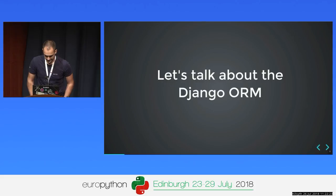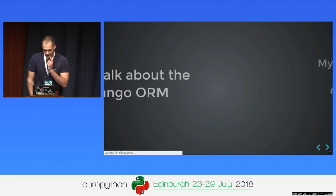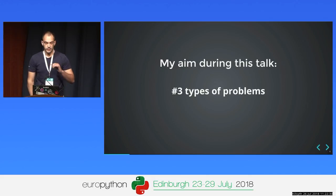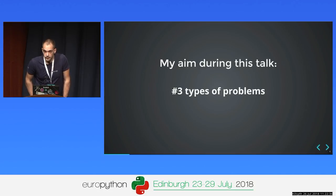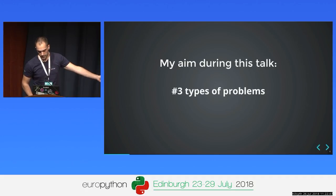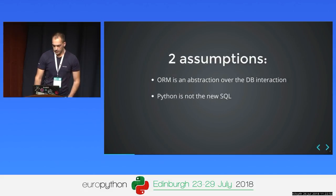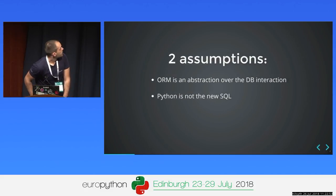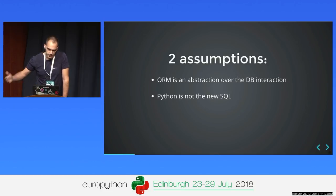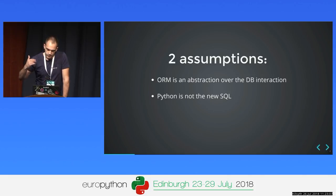Let's talk about Django. My aim during this talk is to tell you about three types of problems that we've hit while developing Django applications and faced while using the ORM to interact with the database. But first, let's make two assumptions. The ORM's main idea is to make the database interaction easier — we want to avoid writing raw SQL.